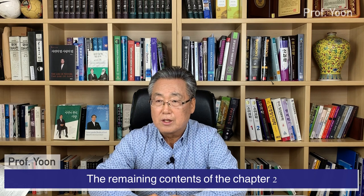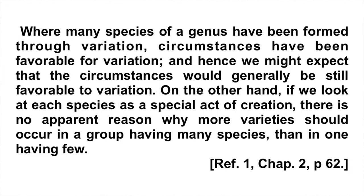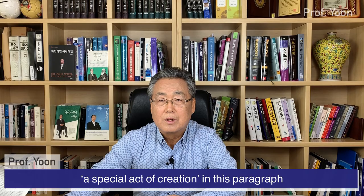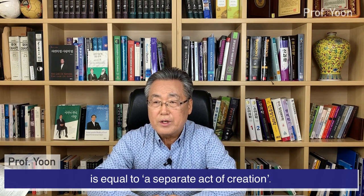The remaining contents of Chapter 2 and Chapter 3 are summarized here. Where many species of a genus have been formed through variation, circumstances have been favorable for variation, and hence we might expect that the circumstances would generally be still favorable to variation. On the other hand, if we look at each species as a special act of creation, there is no apparent reason why more varieties should occur in a group having many species than in one having few. A special act of creation in this paragraph is equal to a separate act of creation.